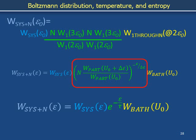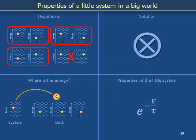Earlier in the module we anchored on an initial condition in which the system had some energy, then considered how the number of bath states increases when energy transfers from system to bath. In the bottom equations on this page, we anchor on the situation where all world energy is in the bath and consider transfers from bath to system — a perspective sometimes encountered in textbooks. The words sound slightly different but the idea is the same. All else equal, the number of configurations of a very large bath decreases exponentially with the energy transferred out of it to a connected system. The Boltzmann factor is the first of a small collection of expressions we will explore in the next video module.